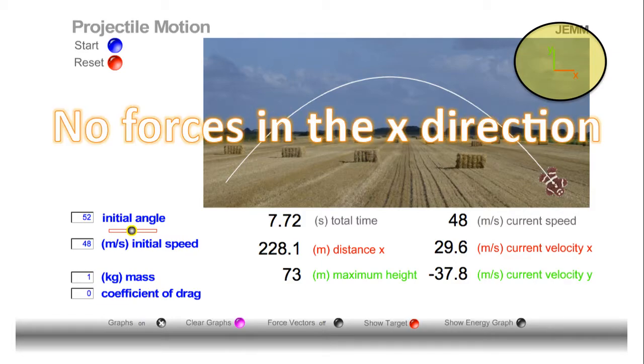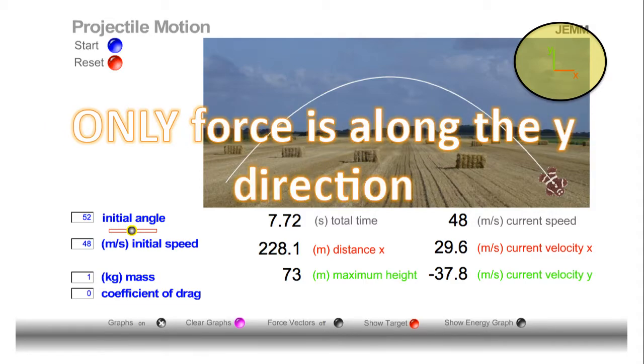Well, as you just saw, we're assuming there's no drag, so we're assuming there's no forces in the X direction. And the only other force is gravity, and that's acting along the Y direction. So that's why we're able to break up this problem into an X and a Y direction.